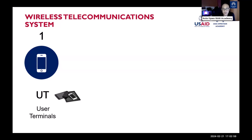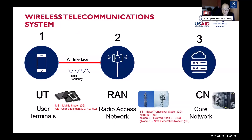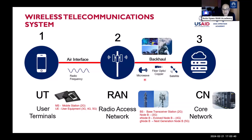User terminals connect to a radio access network, also known as cell sites. The RAN is the critical middleman bridging devices with the network via the air interface or frequency. The radio access network is then connected to the core network — the nerve center that processes, manages, and routes vast amounts of data — via a backhaul link.